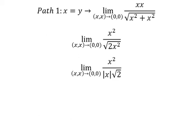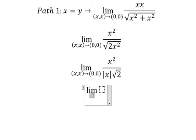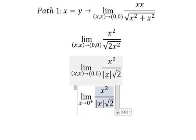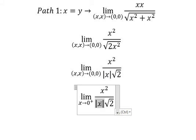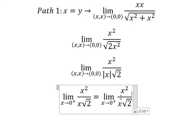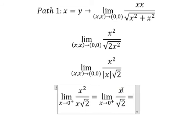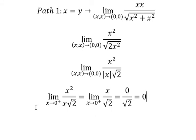Now we need to consider the limit on the left and the limit on the right. On the right, the absolute value of s is positive, so this one is just s. So s squared divided by s gives us s. Now we put zero in here, and we have zero.